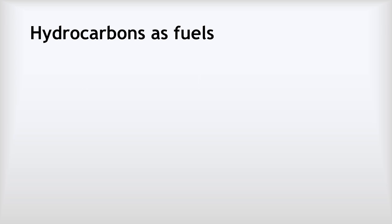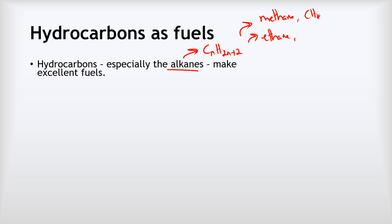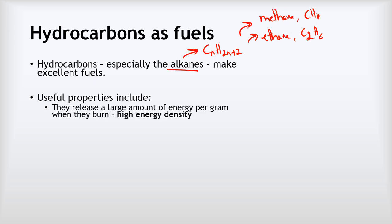Let's start by looking at the use of hydrocarbons as fuels. Hydrocarbons, especially the alkanes which we met in the previous video, are any compound with the formula CₙH₂ₙ₊₂. The best examples are methane CH₄, ethane C₂H₆, and so on. These make excellent fuels. Their properties include that they release a large amount of energy per gram when they burn — we describe them as having a very high energy density. From quite a small volume of fuel you can extract a very large amount of energy, which makes them very useful.